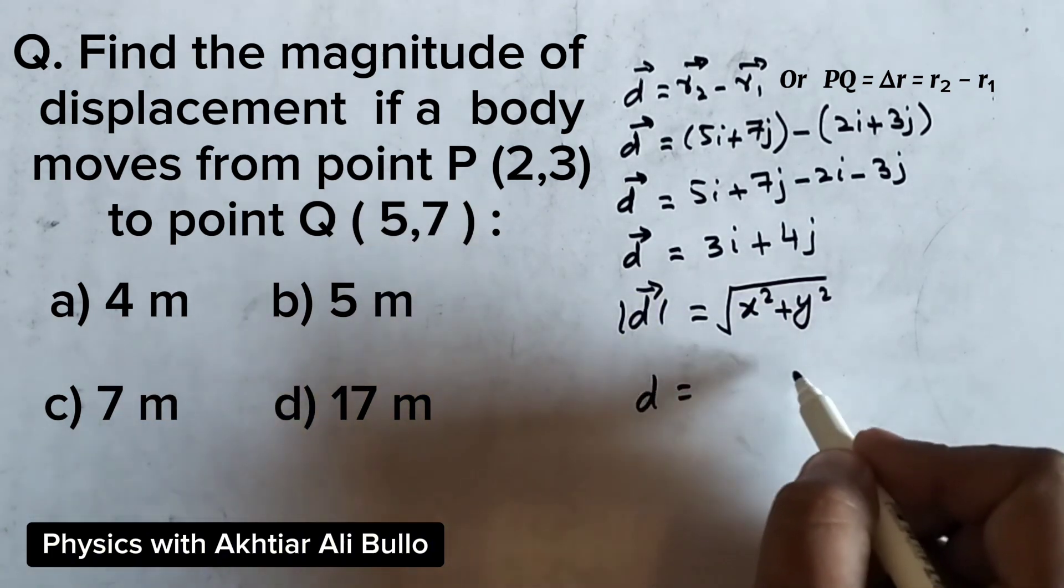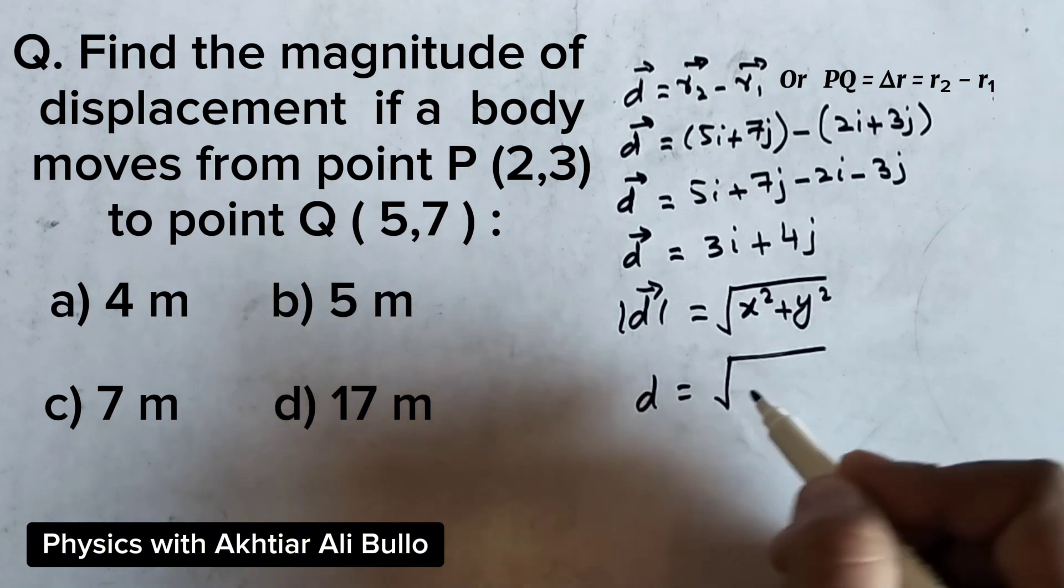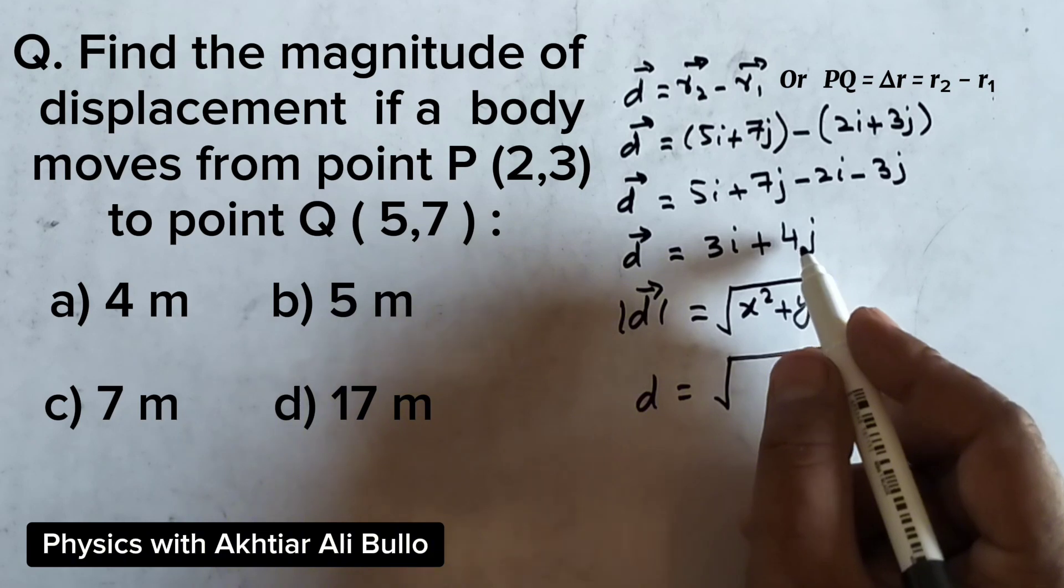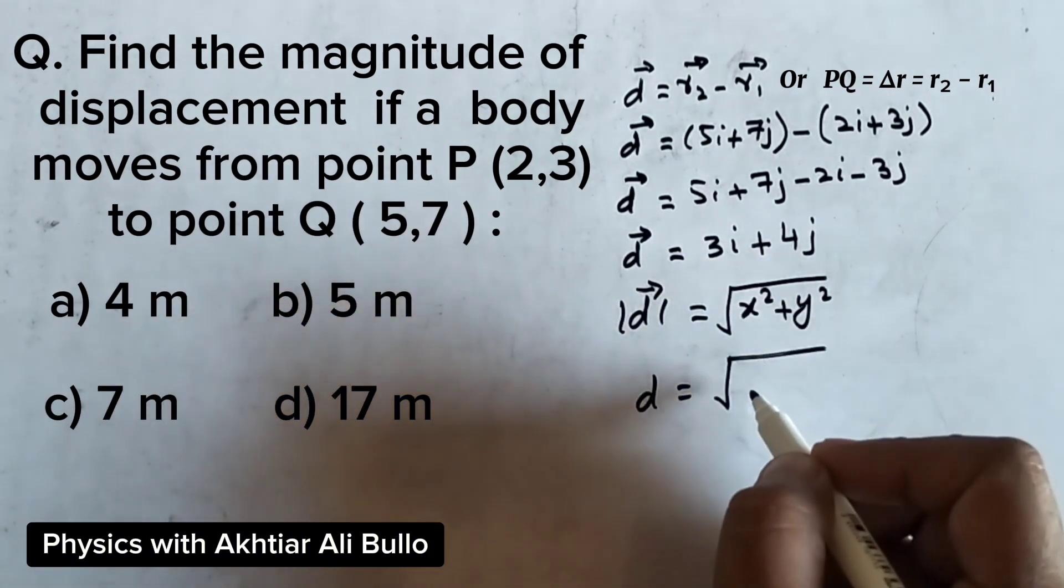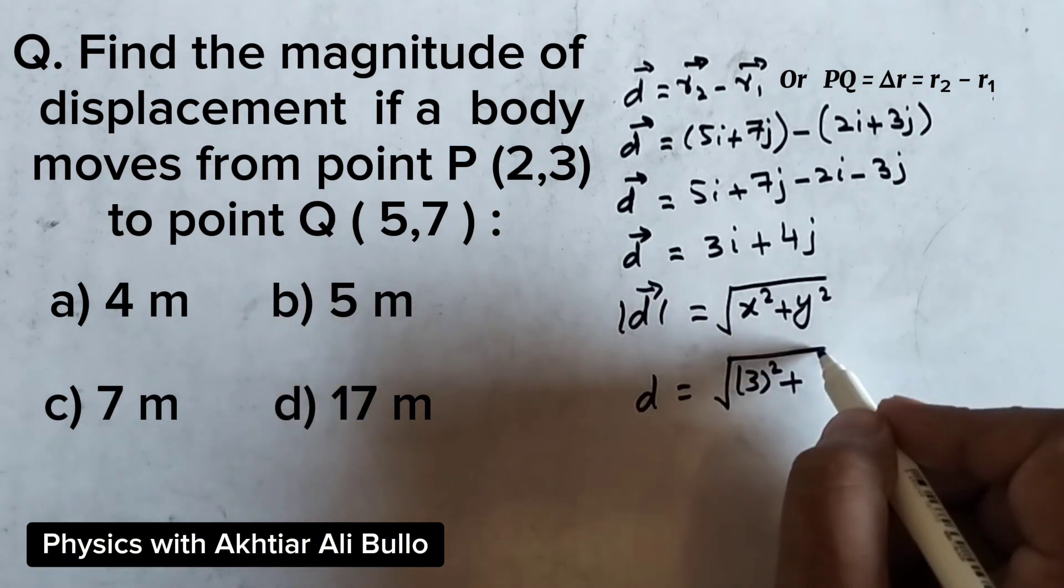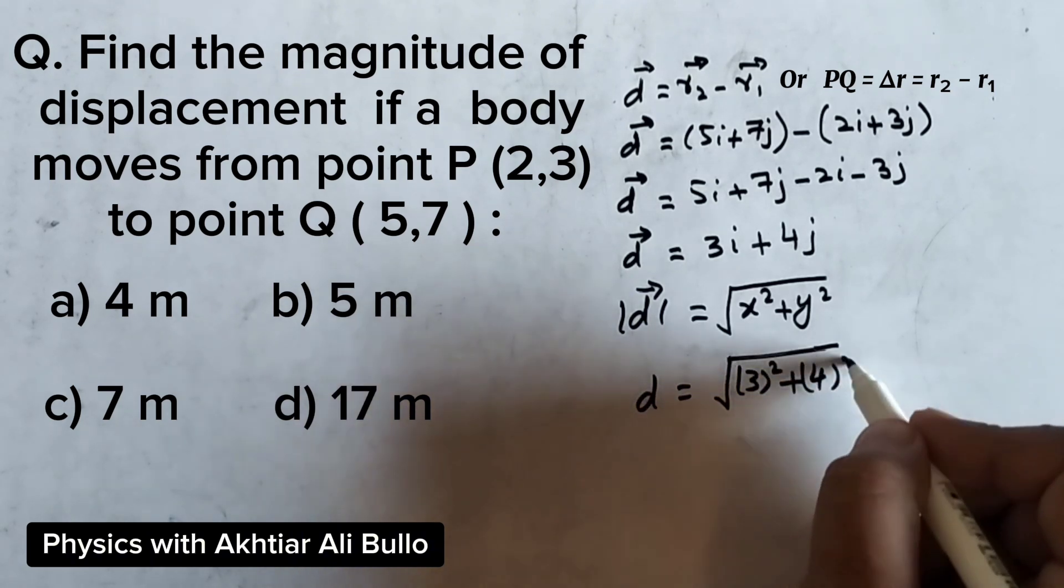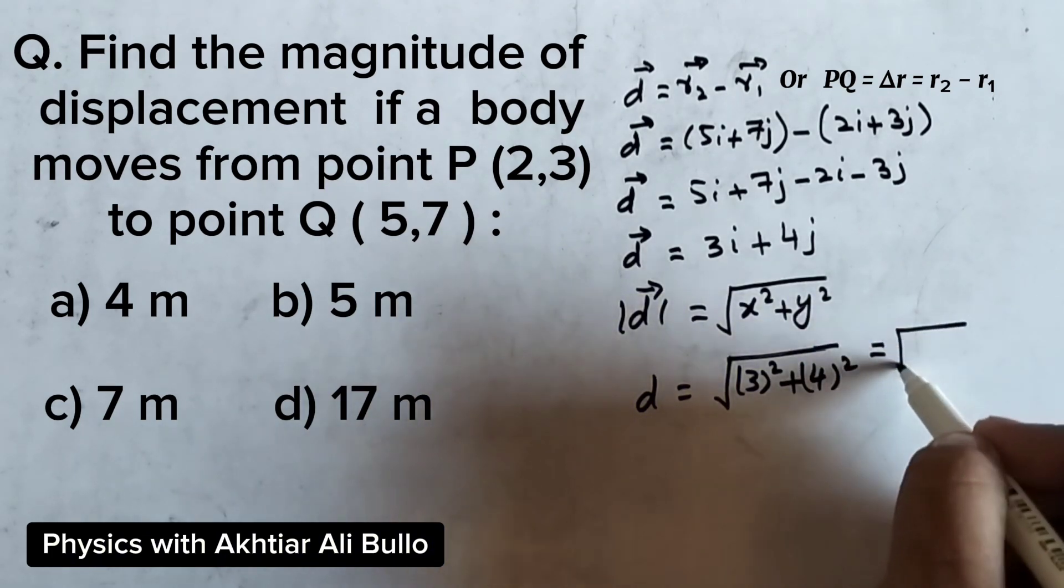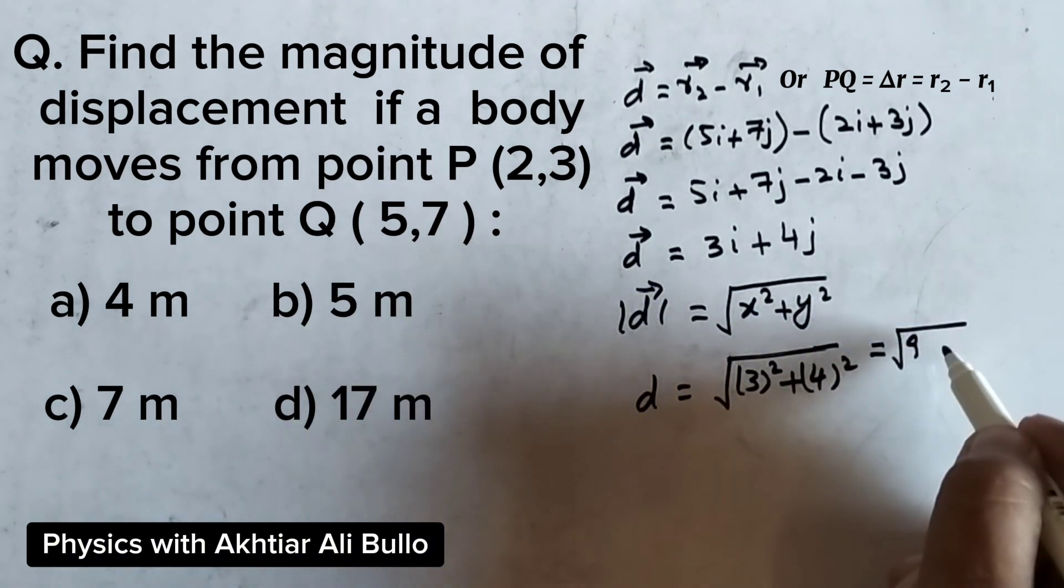The magnitude of displacement will be calculated where x is 3 and y is 4. So, x squared means square of 3, plus y squared means square of 4. It will be under root, the square of 3 is 9, plus the square of 4 is 16.